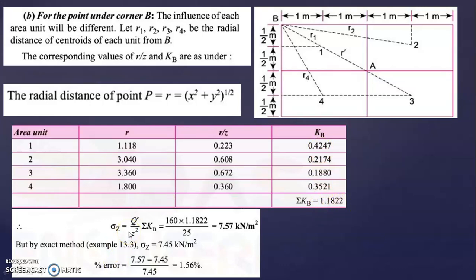Now find the vertical stress using the formula: σz = Q'/Z² × ΣKB. Q is 160 (area 1×2 multiplied by load 80 = 160), and ΣKB = 1.1822. So σz = 160 × 1.1822 ÷ 25 = 7.57 kN/m².